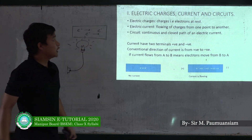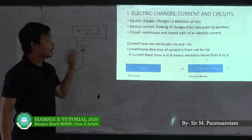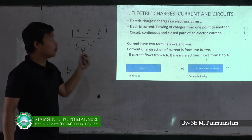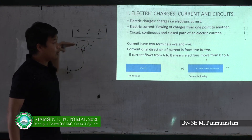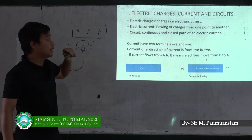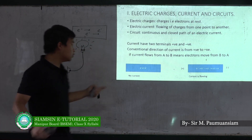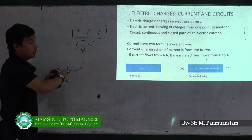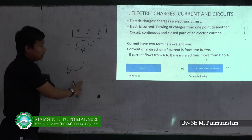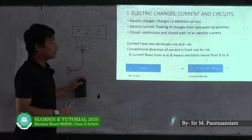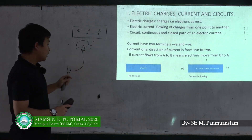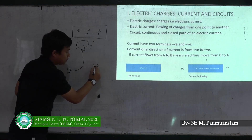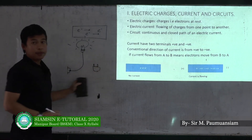The definition: electric charges are at rest. The charge is moving. The electric current is the flowing of charges from one point to another. Electric charges are moving. The first charge is moving, the second charge is moving. If you are in the electric circuit, the current is moving.